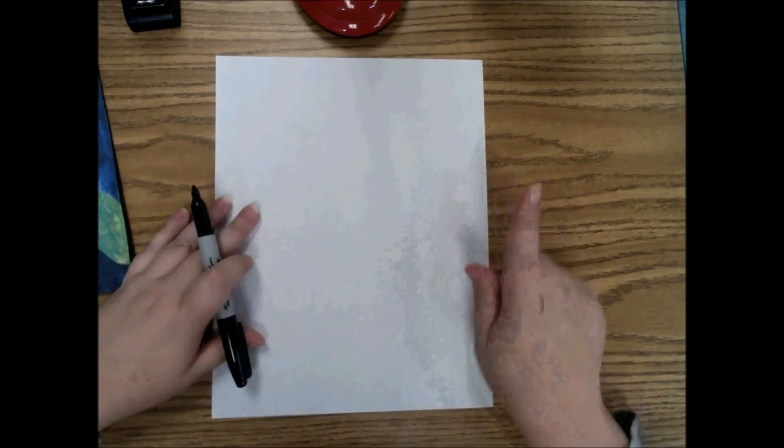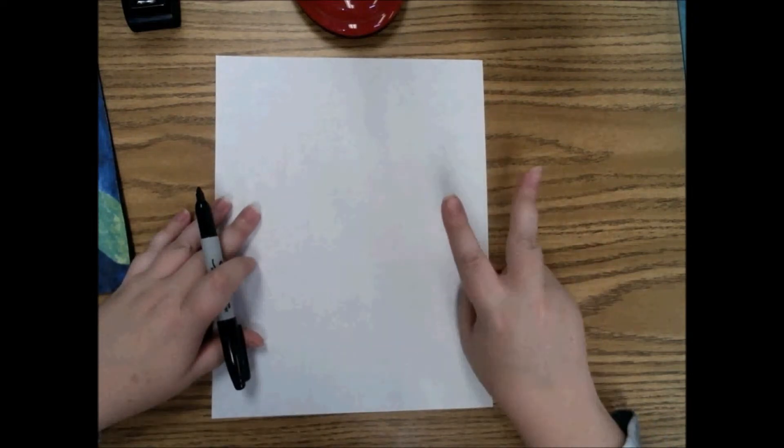So today we're going to be doing part one of our two-part lesson. Next week we'll be finishing our art and coloring it in. We'll be learning about some different colors that we can use but today we'll be doing our portraits, drawing, and doing some different types of lines.